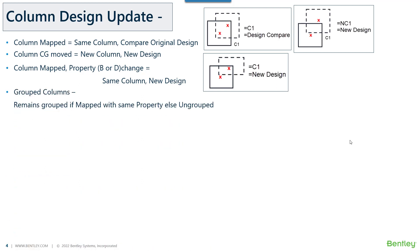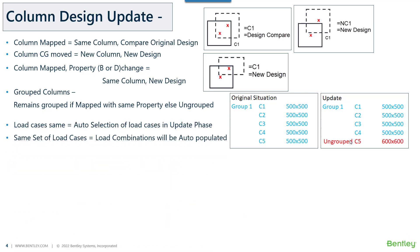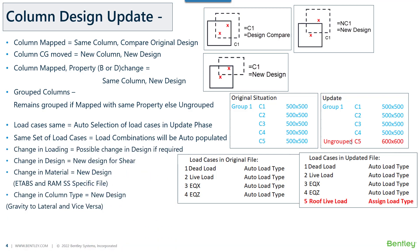Regarding grouping of columns in RCDC: if originally five columns were grouped and in the updated model one column's section property has changed, that column will be removed from the group while the other four with the same sectional property will be retained. For load cases, those that remain the same in both original and updated files will have their load type auto-assigned by the program. Any new load case identified will need to be manually assigned. The same rule applies to load combinations — if the set of load cases is the same, load combinations from the original file will be auto-populated; otherwise they must be added again.